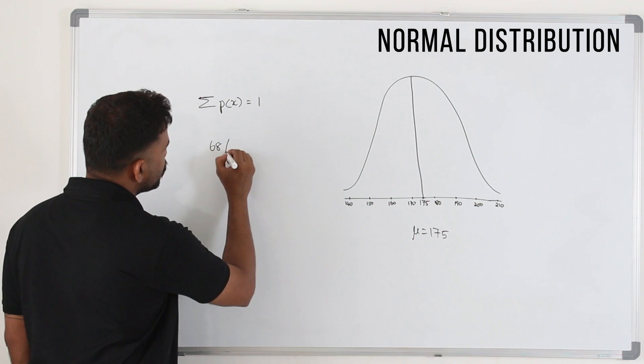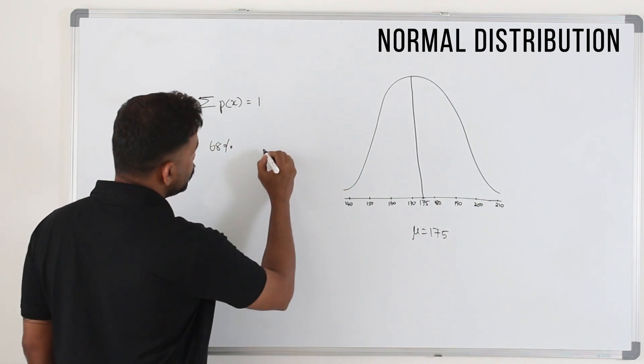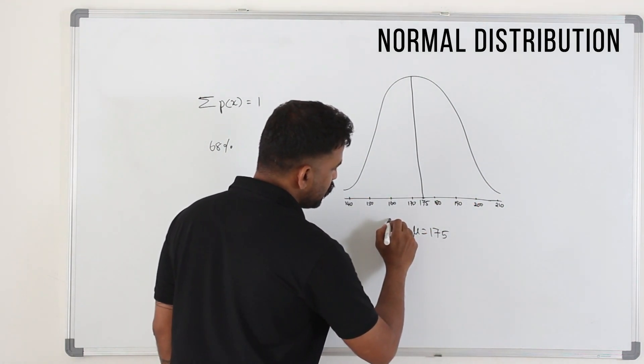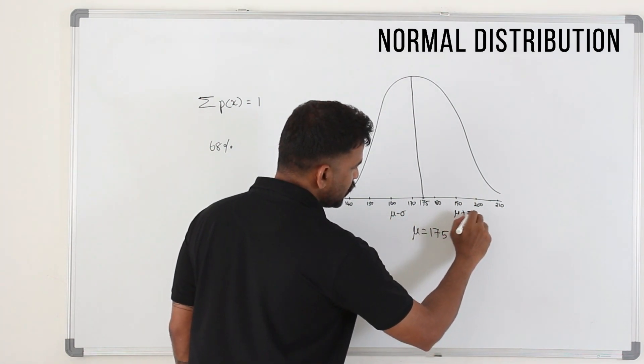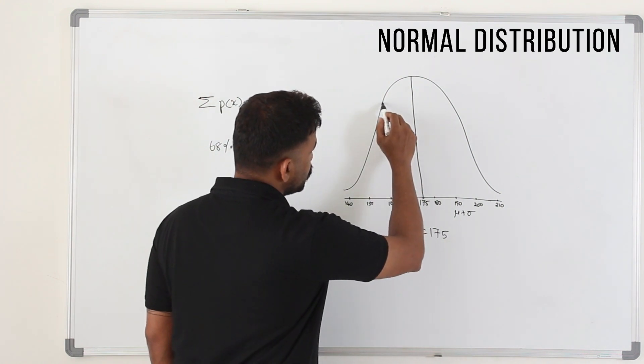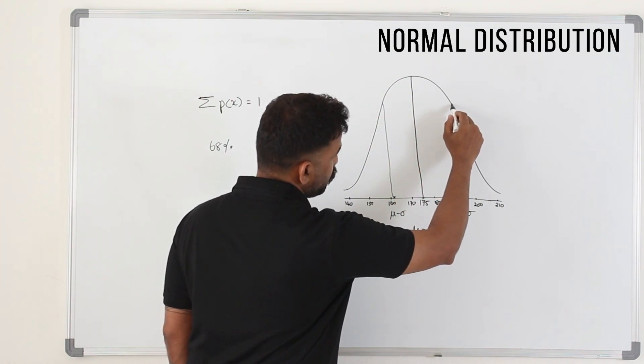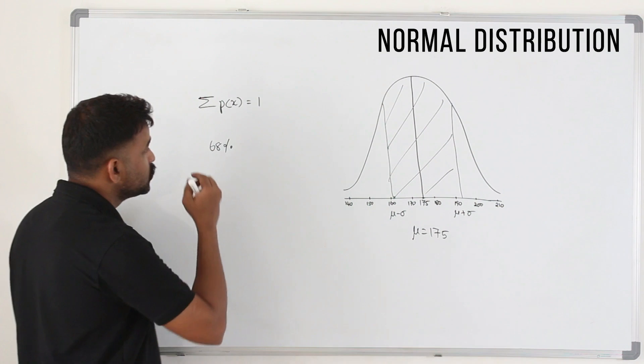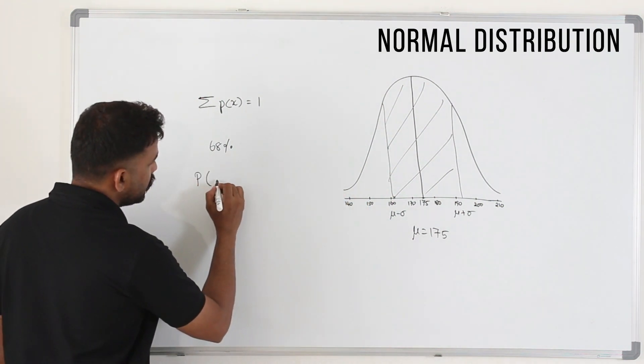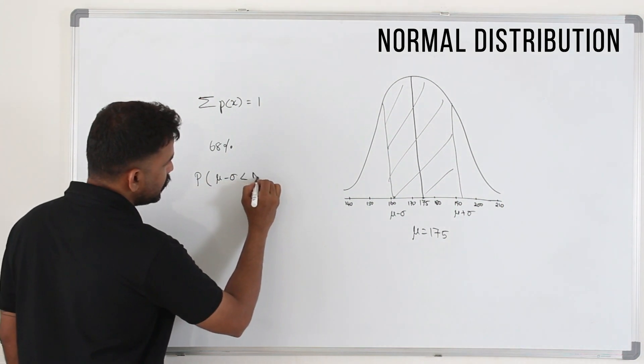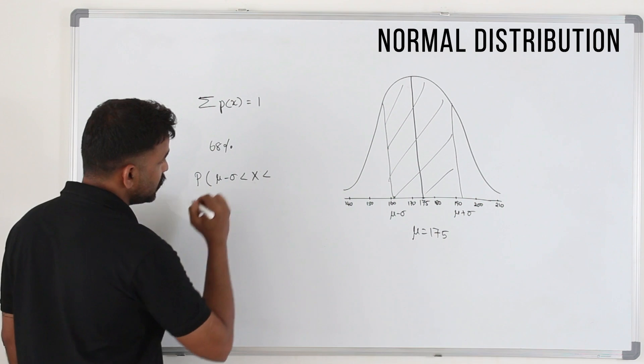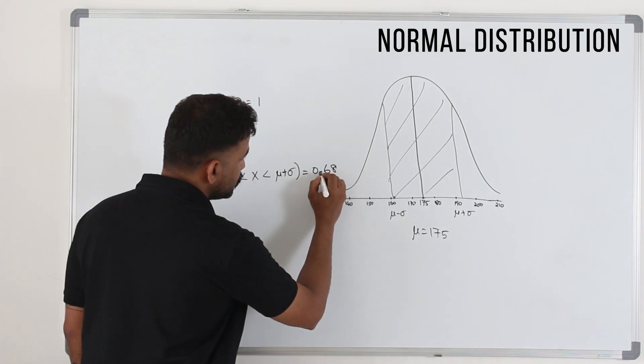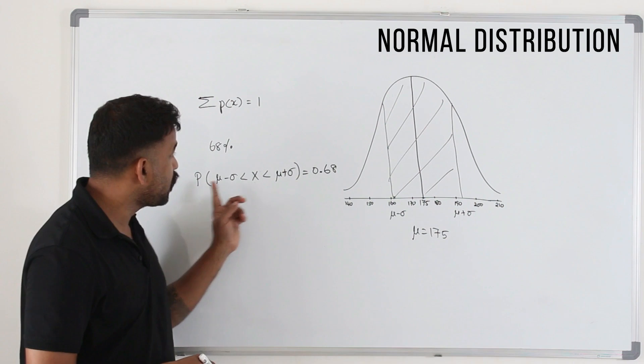Then 68 percent of all the data lies within one standard deviation away from μ. That means μ minus σ is here, μ plus σ is here somewhere at this point. If you take the area between these two points, this area is going to be 0.68. We write it as P(μ - σ < X < μ + σ) = 0.68. Though we're saying area, we're talking about probability.